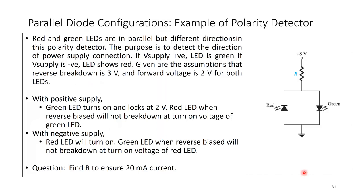Next example: a polarity detector circuit. Red and green LEDs are connected in parallel but in opposite directions. The purpose is to detect the direction of the power supply connection.